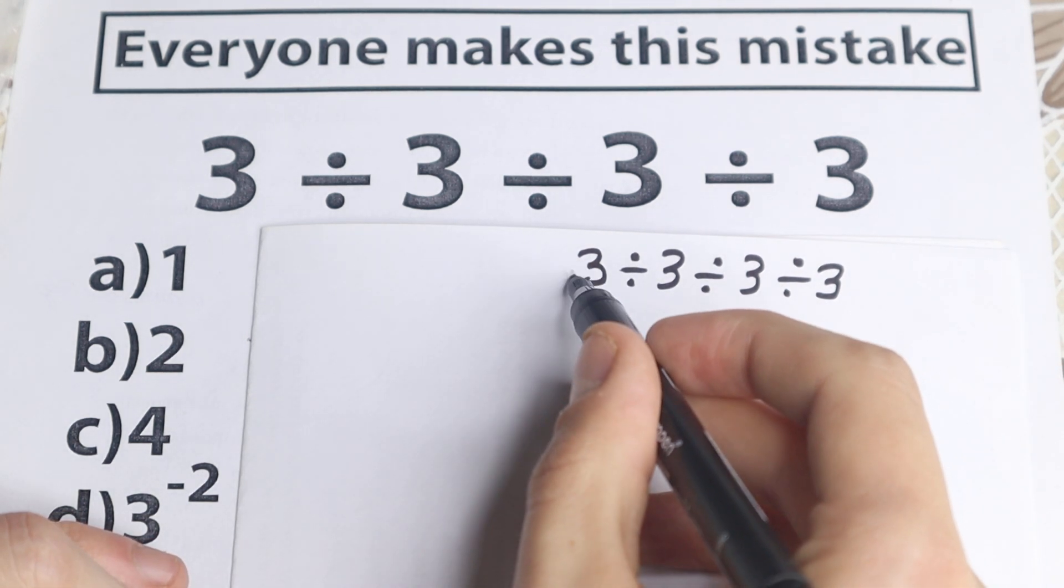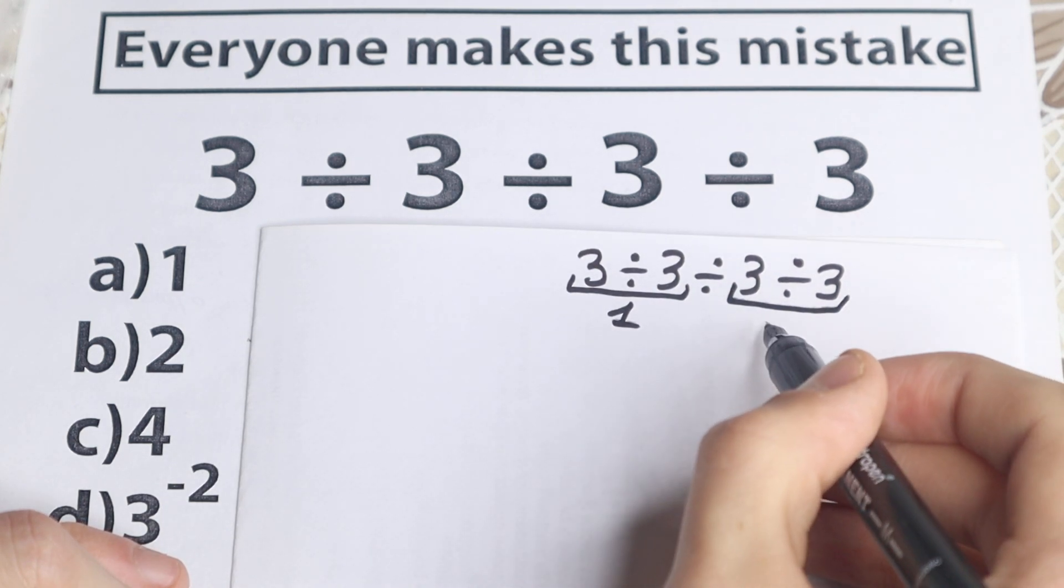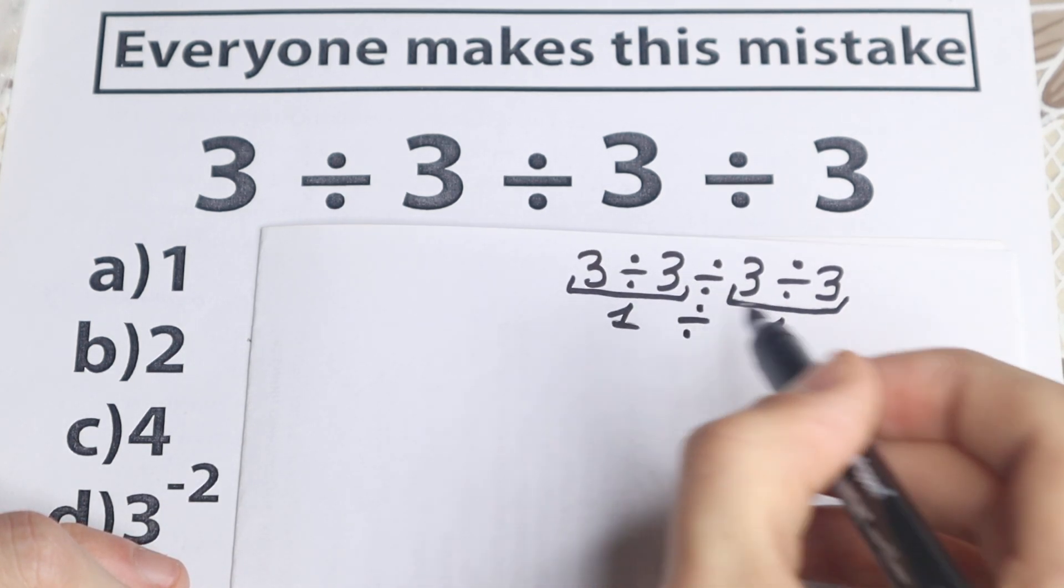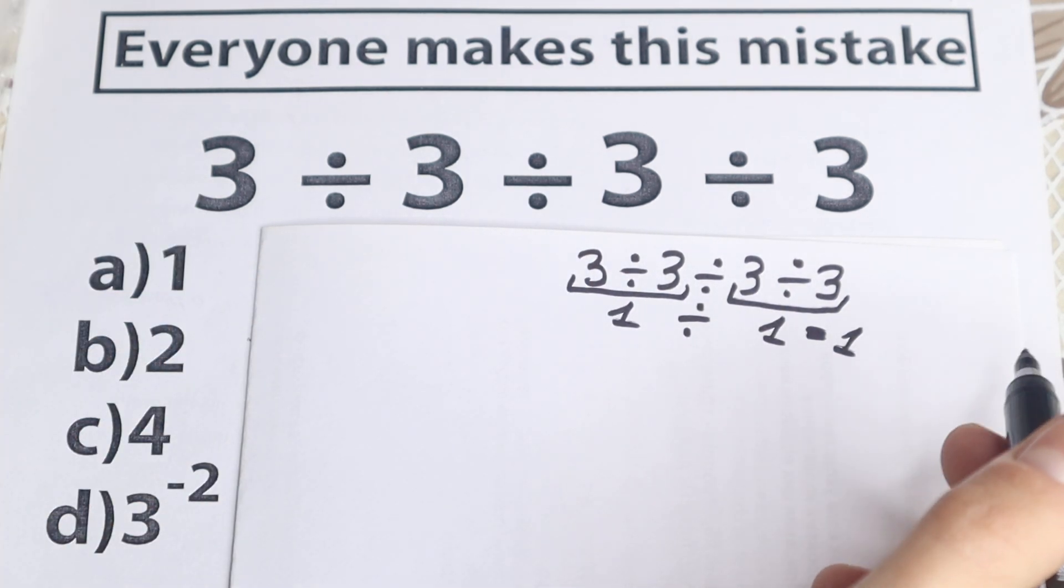So they say, okay, 3 divided by 3, great, this is equal to 1. And right here 3 divided by 3 in the end equal to 1 as well. So as a result 1 divided by 1 equal to 1. And they say, okay, option A is a correct answer.